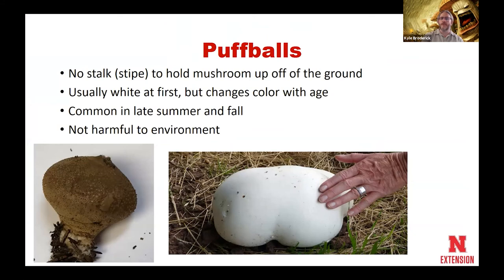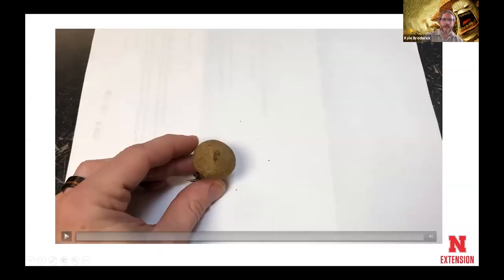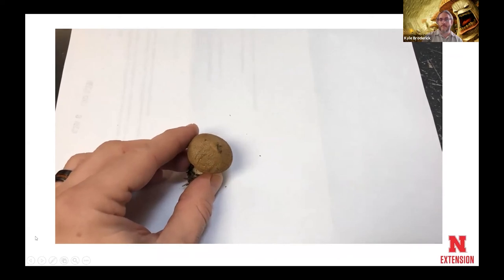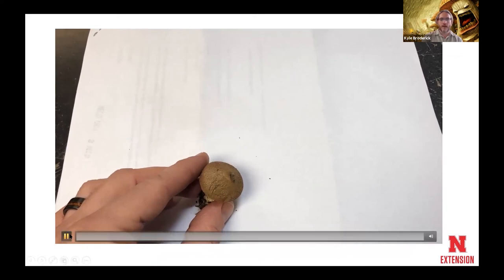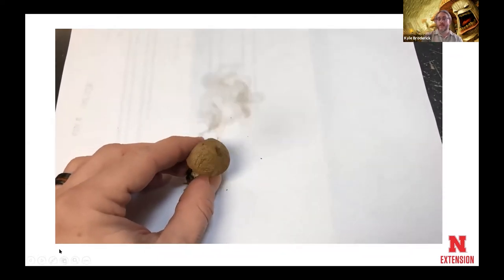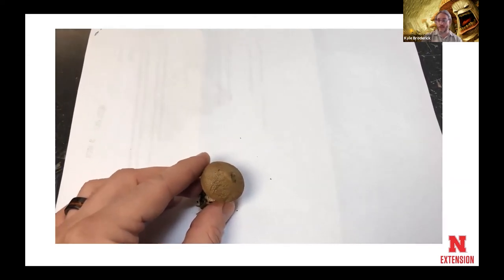We also have our puff balls. These tend to be large masses of fungi that don't have a stock to hold them up off the ground. Often they're going to be white at first, but they will change color with age. These guys are very common in late summer and the fall, and generally aren't going to be harmful to our environment. As the name puff ball suggests, you can kind of squeeze them and get a puff of stuff that comes out — that little cloud is hundreds and thousands of fungal spores that are then released.